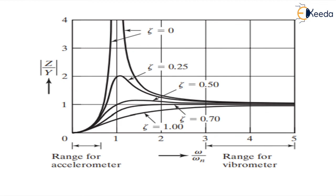If you plot a graph between z upon y and ω upon ωn, we see that the range of vibrometer is from 3 to 5, and the ratio of z upon y is somewhat equal to 1. This is the range in which the vibrometer works.